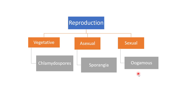Asexual reproduction takes place by means of sporangia. Sexual reproduction is oogamous — meaning there is formation of two sex organs: an antheridium and an oogonium — which I will explain further.